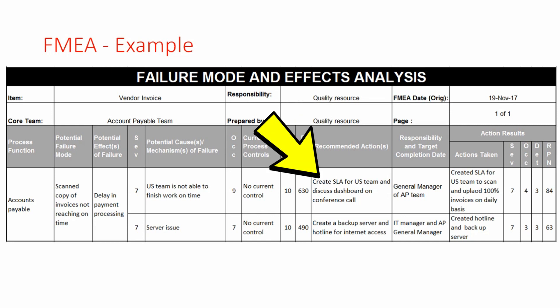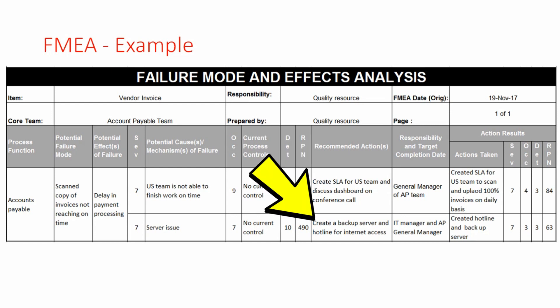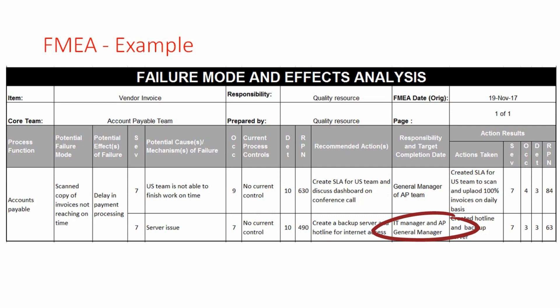For the first failure mode, the team created an SLA (service level agreement) for the US team, and the recommendation was to discuss team performance on weekly conference calls. For the second failure mode, they created a backup server and a hotline for internet access to resolve server issues. Responsibility for the first failure mode was given to the general manager of the AP team, who was to create SLAs, build a dashboard, and start conference call discussions. Responsibility for the second was given to the IT manager and the AP general manager, as they needed to set up the backup server and internet hotline.